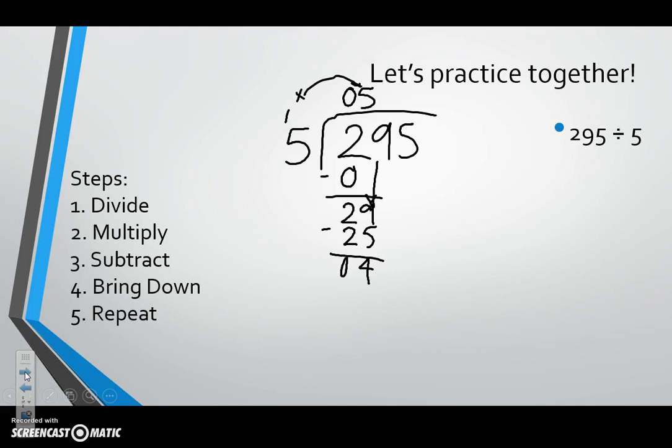We then need to bring down our last number, which is five, and repeat your steps. How many times can five go into 45?